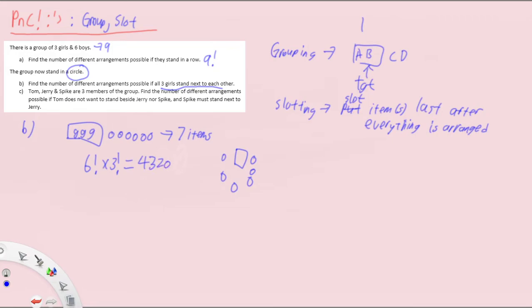Now, is there a need to consider circular permutation for the three factorial? And why is it three factorial and not two factorial? Because we've already accounted for rotational symmetry when we arranged all seven items together — the six boys and the group of girls. There is no additional rotational symmetry when rearranging the girls within their group, so it remains three factorial. That gives us 4320 ways for part B.